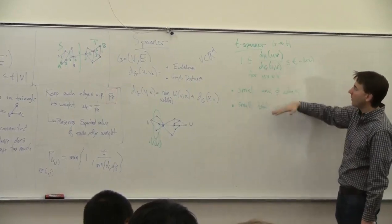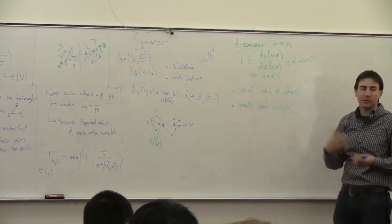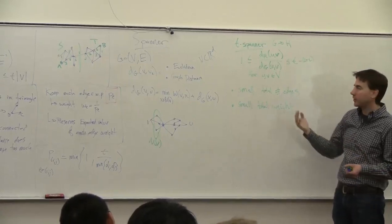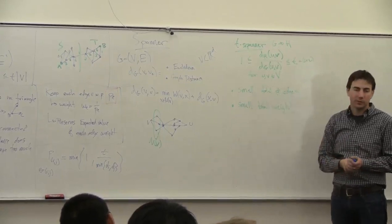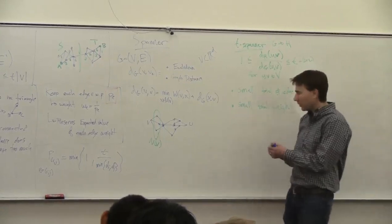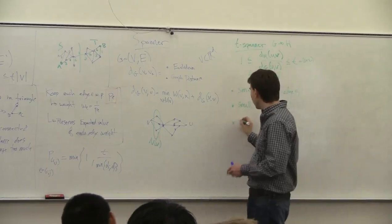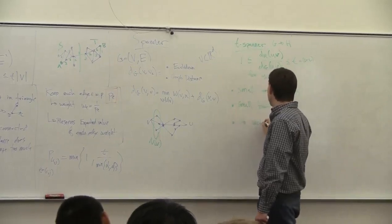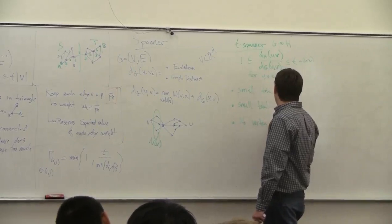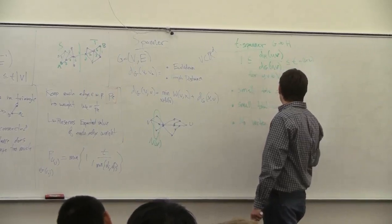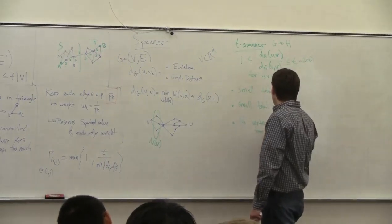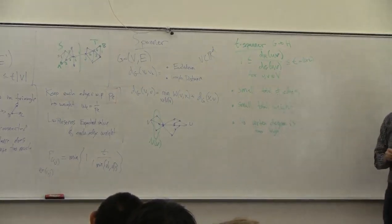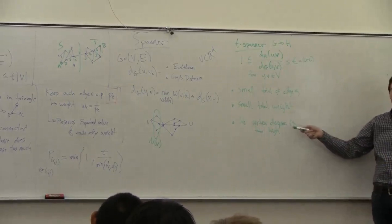There's also a third criterion: no vertex degree is too high. Why would you want a small degree? If you have a lot of edges going to one vertex, that vertex essentially has to do a lot of the routing, and you don't want to put too much strain on one vertex.